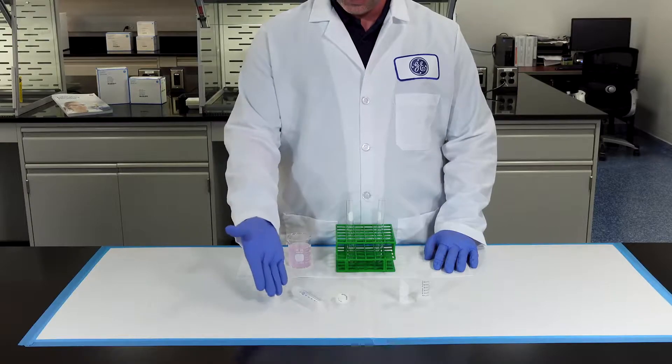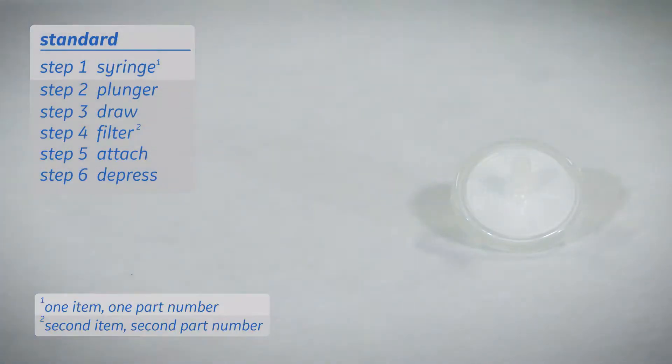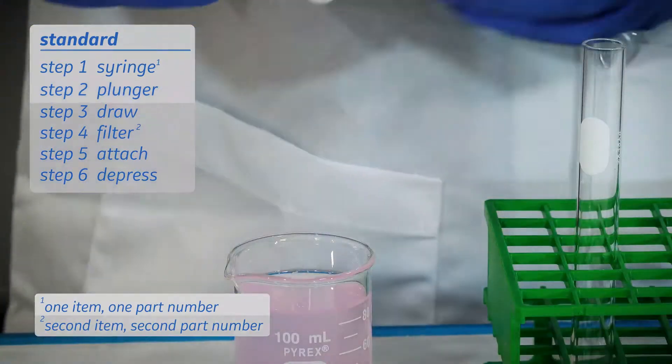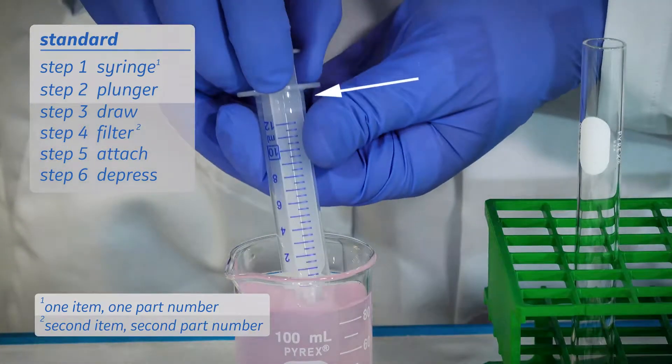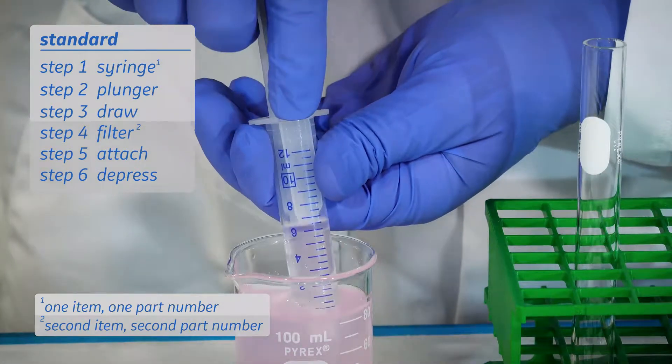First, let's look at the standard syringe and syringe filter. Retrieve your standard syringe. Begin with the plunger inside the syringe barrel. Draw the liquid to be filtered into the syringe barrel.